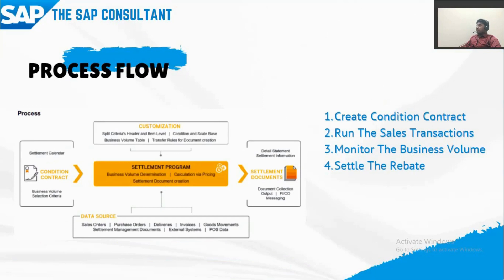In the process flow, we create a condition contract — similar to a condition agreement in the ECC system. We have to input key factors involved in bringing the business volume, such as the sales organization and the customer. Based on that, the condition contract pulls information from sales invoices in S4HANA. The steps are: create a condition contract, create sales transactions for those customers, monitor the business volume by running reports, and once eligible, settle the rebate.